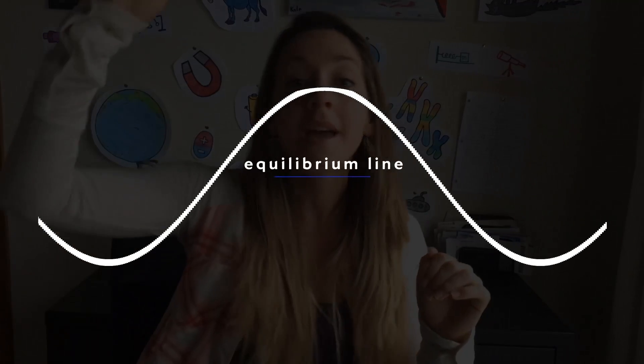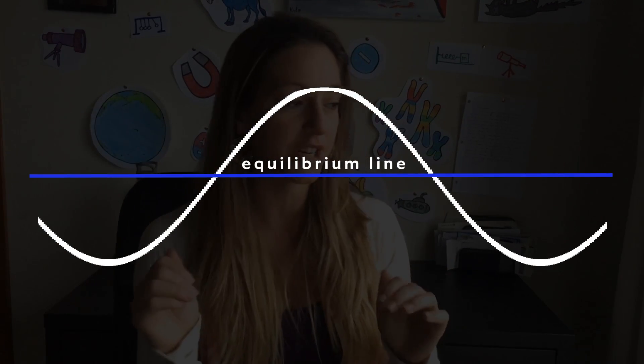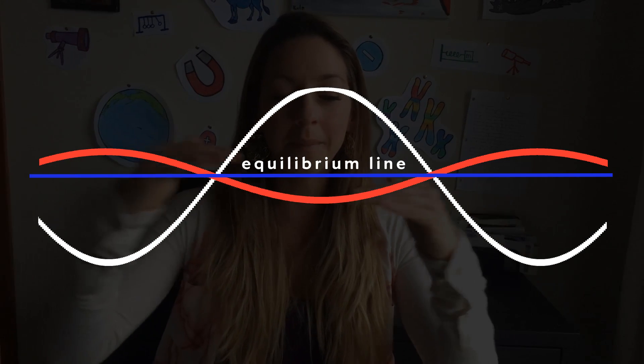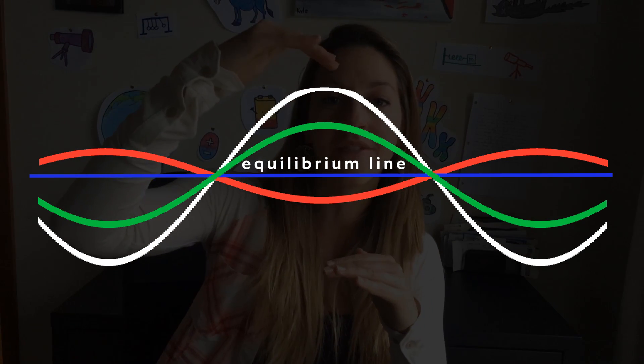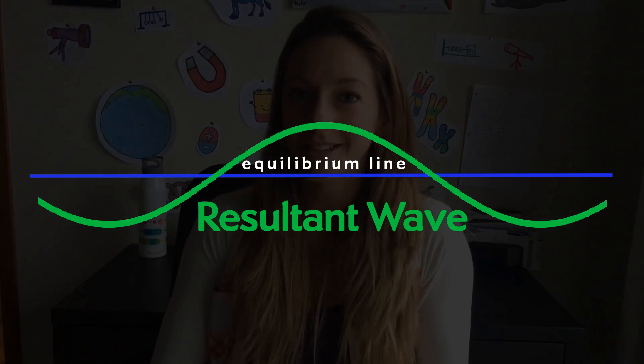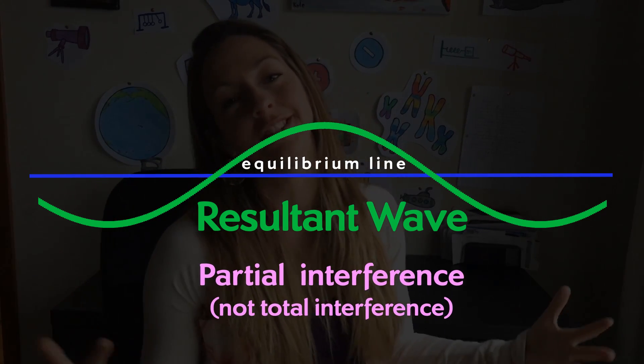Now you can have destructive interference where it doesn't fully cancel out the wave, it just makes a wave a little bit smaller. Say you have a really big wave going up coming from this direction and a little dip coming from this direction. When they meet, it's just going to make that tall wave a little bit shorter. And that's also destructive interference, just not total destructive interference.